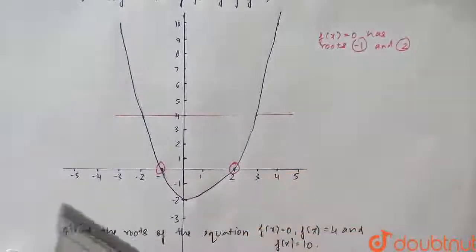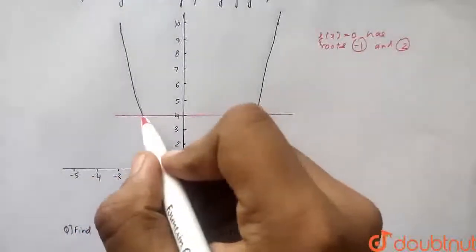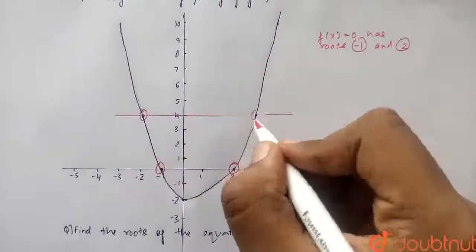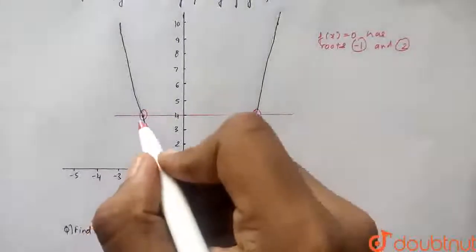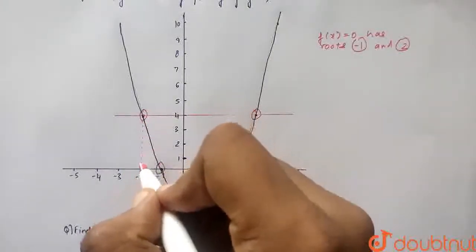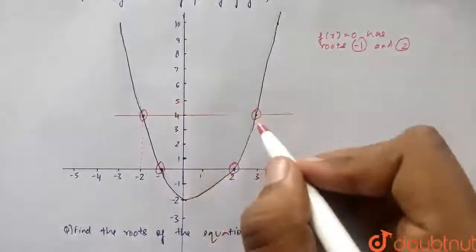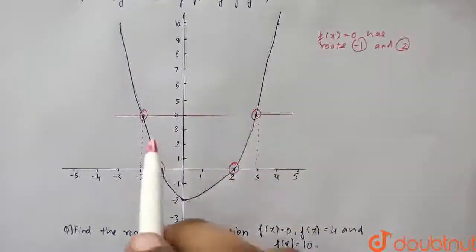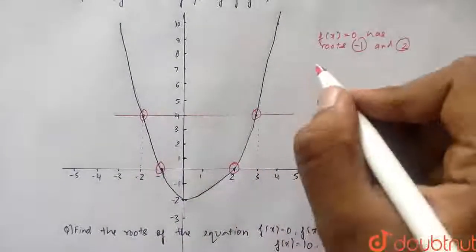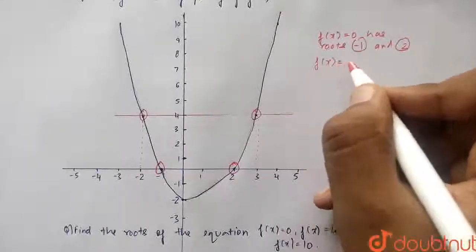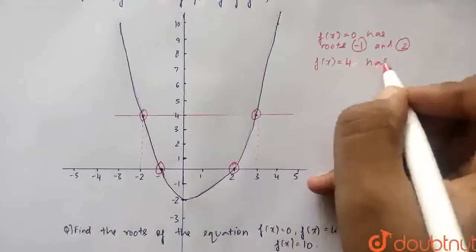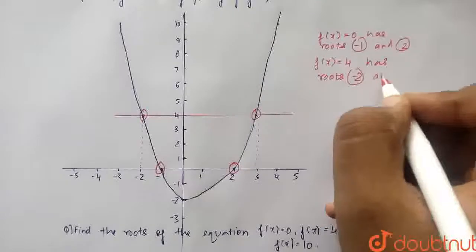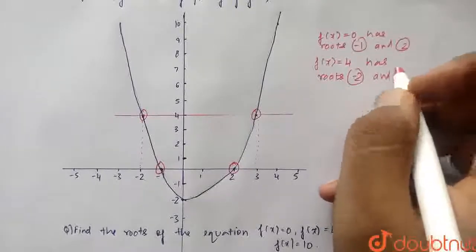Now, basically, the roots of this equation are the points in which the line are intersecting. So this point and this point. So now, these both points are basically, when we draw a straight line, so it matches to minus 2 and the value of x here is 3. So therefore, it intersects on the point minus 2 and 3. So therefore, f of x is equal to 4 has roots minus 2 and 3.